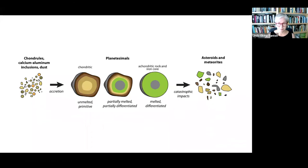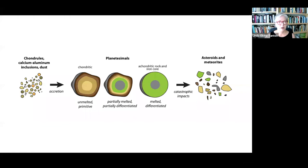On the left we have the pebbles — chondrules, blobs of magma from the early solar system, calcium-aluminum inclusions, dust — that accreted into planetesimals. The left-handmost planetesimal is chondritic, meaning its chondrules are still visible: primitive unmelted material straight from the disk. In the middle is one that partly melted on the inside from aluminum-26 heat. On the right, one that melted all the way, going through differentiation — the metal drained into the center to make a metal core, leaving rock as the external mantle, the same form as our Earth. A lot of these planetesimals were then accreted into planets.